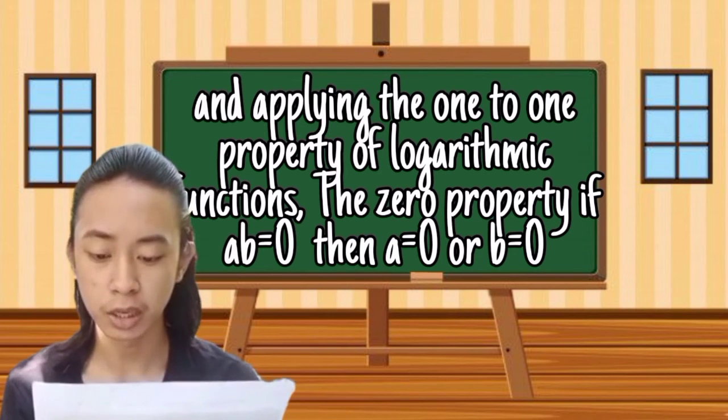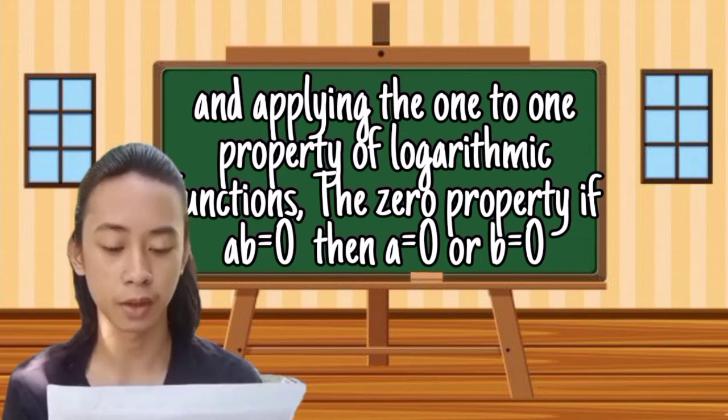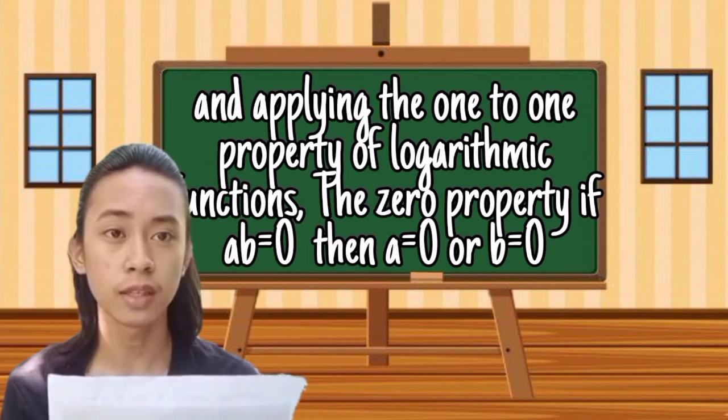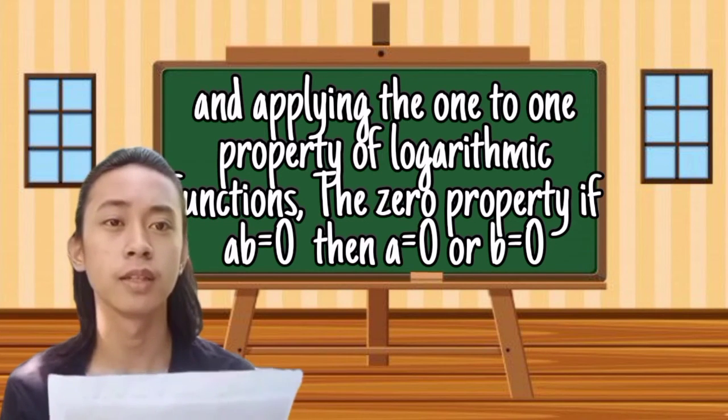The zero property: if ab=0, then a=0 or b=0.